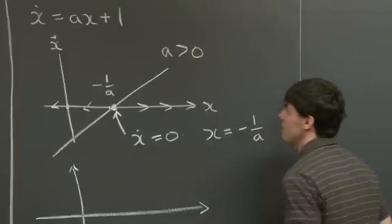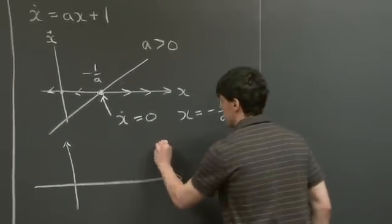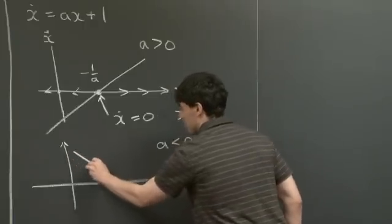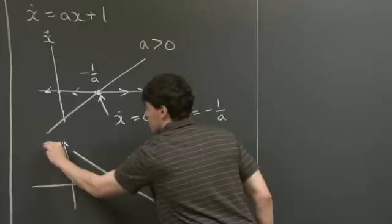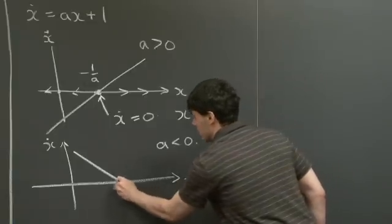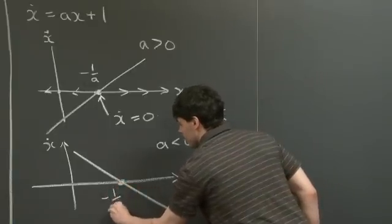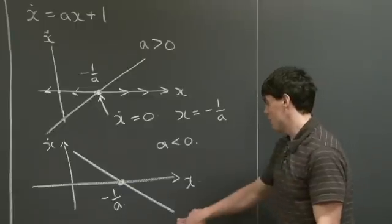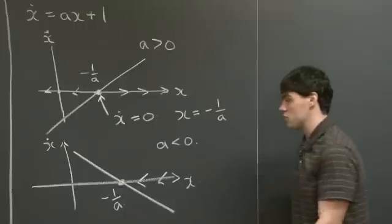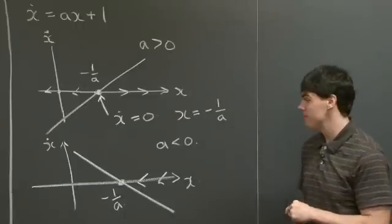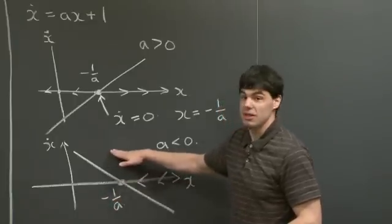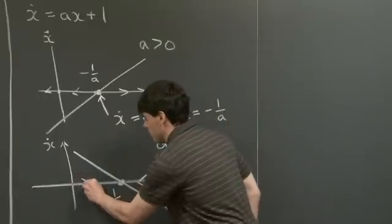What other qualitative behavior could we have? Well, when a is less than 0, the slope of this curve is going to be negative. Plotting x dot versus x again, the intercept is still going to be at negative 1 over a. However, when x is above the critical point, x dot is negative, so solutions will want to tend to move back towards negative 1 over a. And when x is below the critical point, x dot is positive, so solutions will want to grow.